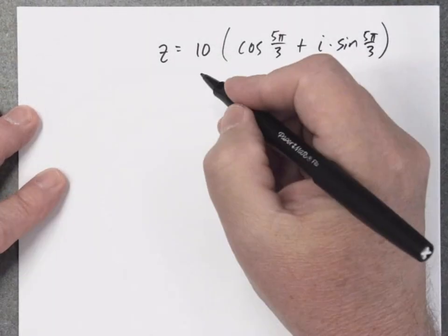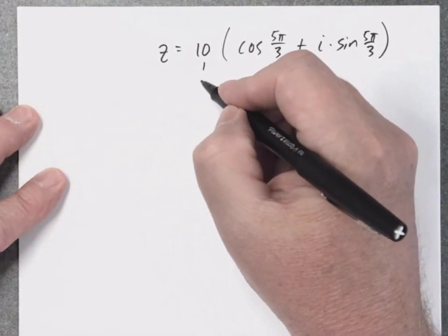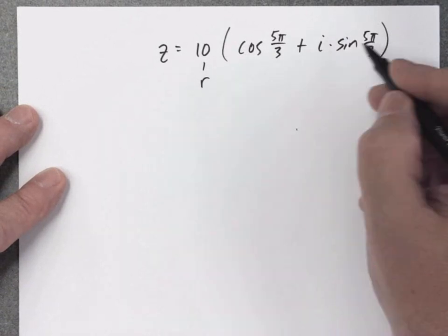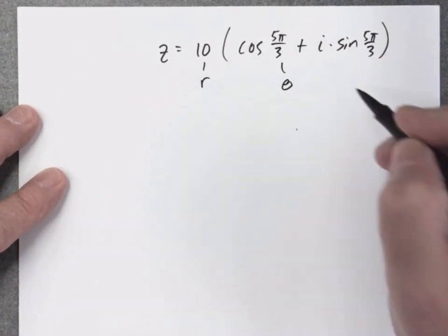So if you recall, in polar form, that's going to be R, and these angles are of course the same, and they're theta.